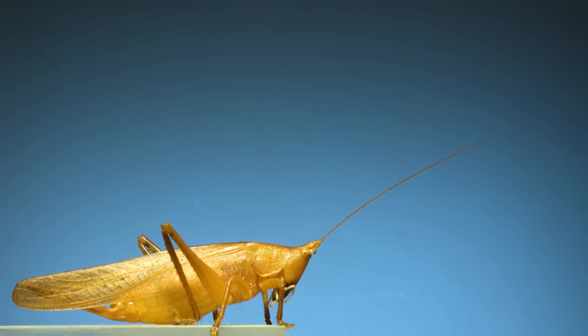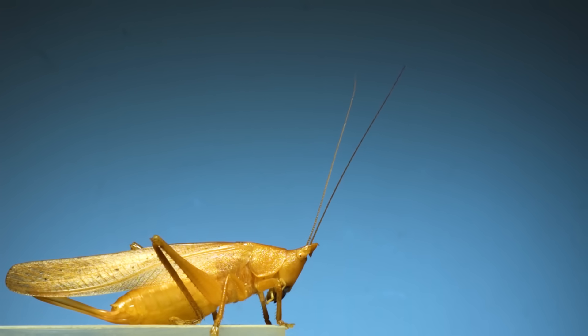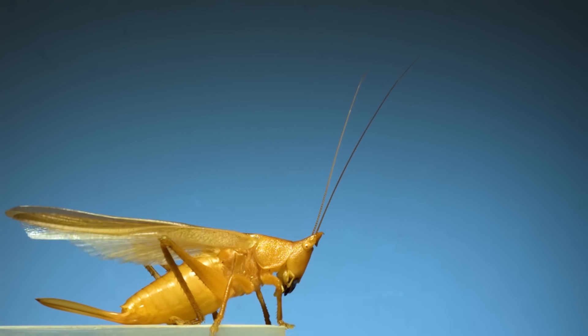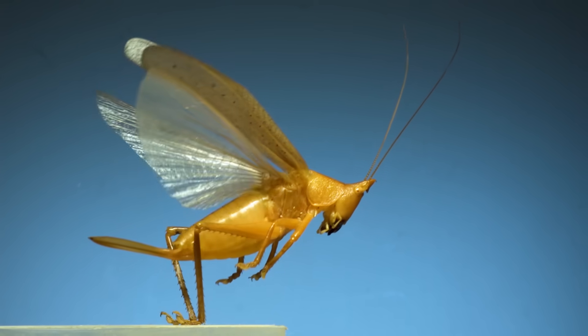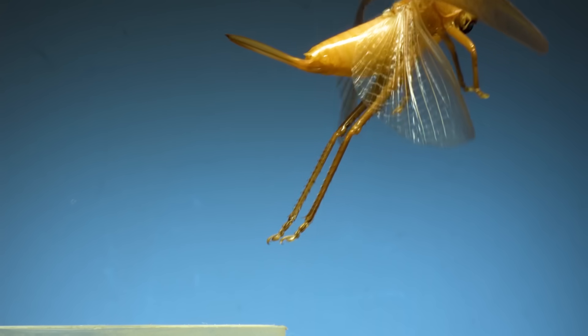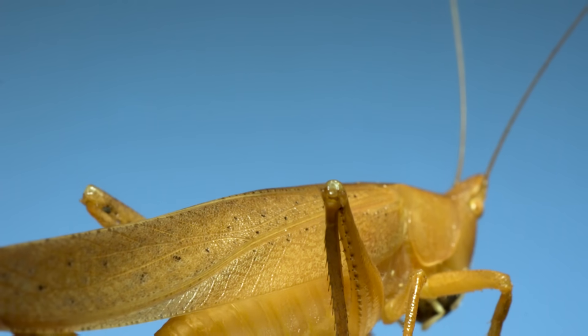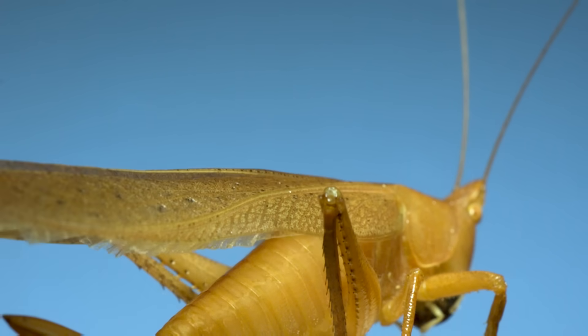Now this is a katydid. Unlike the weevils this insect really uses its jump when it begins to fly. This one times the first downbeat of the wing to end right when the feet leave the ground. When it lifts its front wing you can see how the hind wings are stored folded up like an accordion.